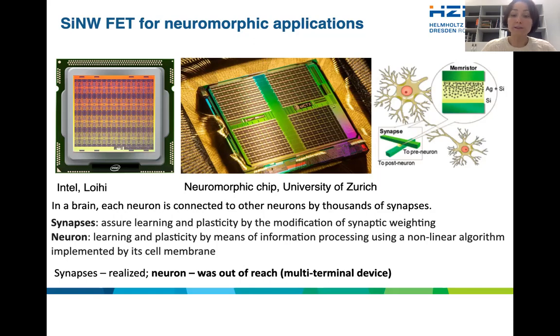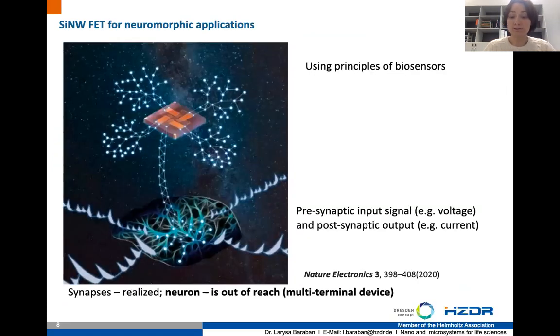So what we know already for decades is that the synapses, artificial synapses, are under active research. Still the neuron, artificial neuron, was out of reach and we wanted to work on that. Neuron would be a multi-terminal device compared to synapse, that is a two-terminal device. That brings us to our recent work about the so-called neuron transistor that is using in its design the silicon nanowire FET. In this case, we are trying to use as a presynaptic input signal the gate voltage of the transistor and the postsynaptic output would be our source drain current.